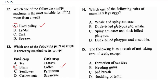Question 14 asks which pair of mammals lays eggs. Whale is a mammal but does not lay eggs, so those options are wrong. Crocodile is actually a reptile and lays eggs, so it's not a mammal. The correct answer is C: spiny anteater and duck-billed platypus — these are mammals that lay eggs.